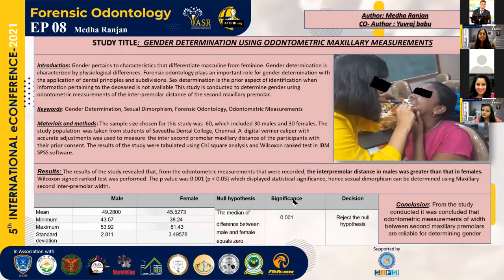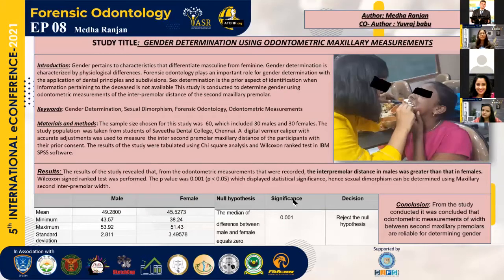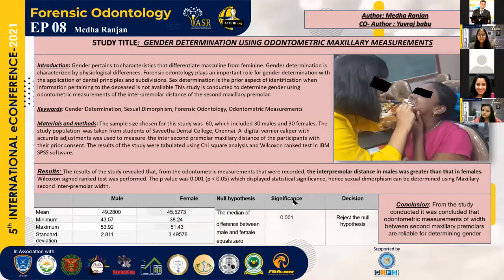For this purpose, my research study was conducted on 60 volunteers, which included 30 males and 30 females, with the help of a digital vernier caliper with accurate measurements. The measurements were taken from the buccal aspect of one premolar to the buccal aspect of the other premolar, and the results obtained were tabulated using IBM SPSS software and chi-square analysis.